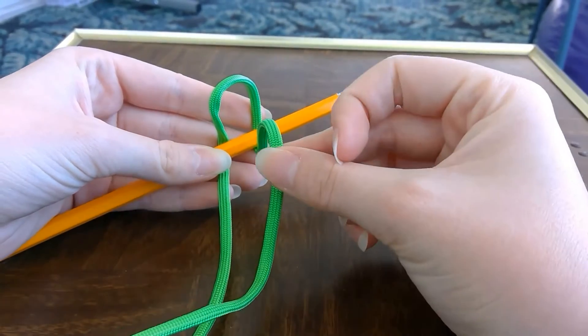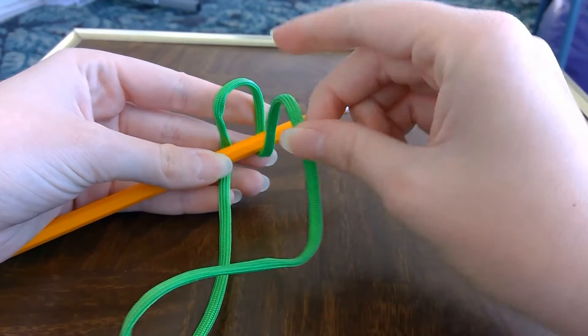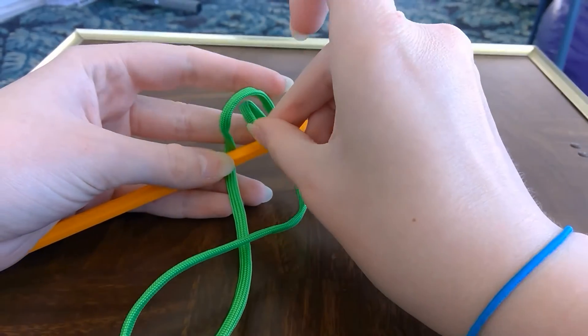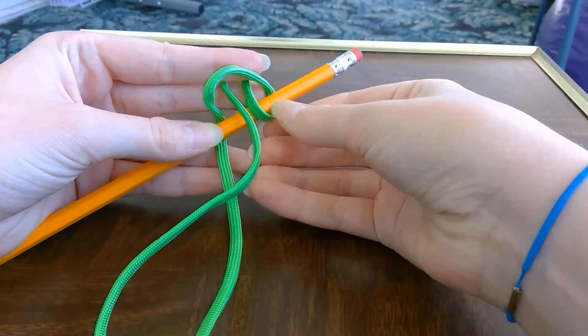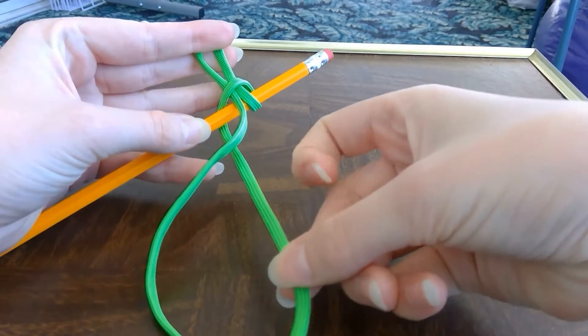Next step is you're going to take one of the ends, make a loop out of that, and push it through the first loop and tighten with the other end.